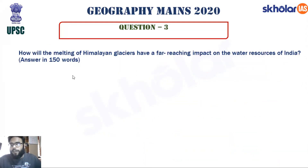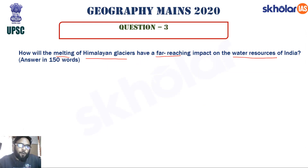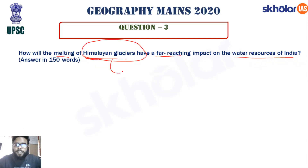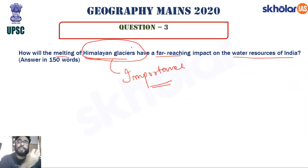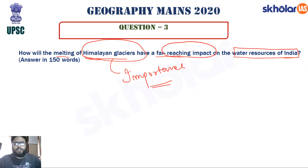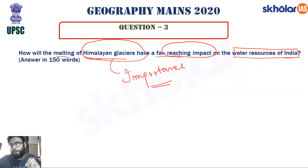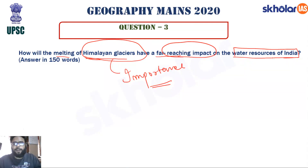The third question: 'How will the melting of the Himalayan glaciers have a far-reaching impact on the water resources of India?' First, discuss the importance of Himalayan glaciers, then explain the impact of their melting on water resources — both river flow and groundwater.